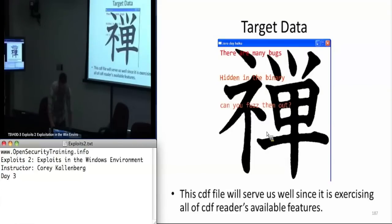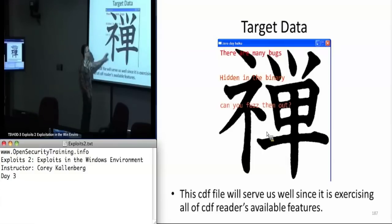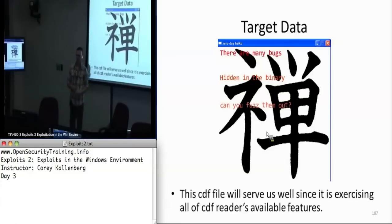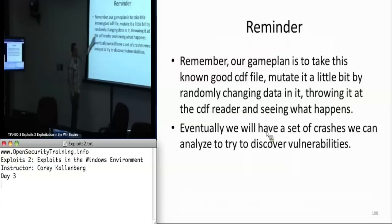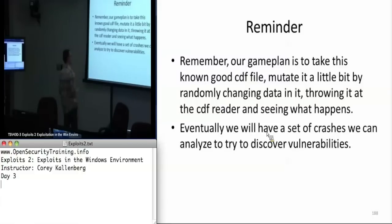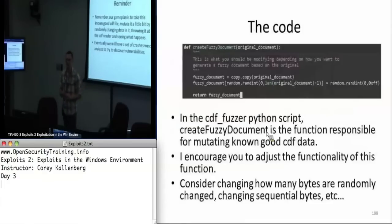For the simple framework I gave you, you're just going to use one known good file and fuzz based off that. If we were fuzzing Adobe PDF reader, we'd want to make one document with an Adobe PDF generator that included every possible feature Adobe reader had to offer. So remember our general plan: we take the known good file, mutate it a little bit by flipping random bits, take that mutated file, try to get CDF reader to render it, generate a set of crashes, and then look at those crashes later today to decide whether they represent exploitable conditions.